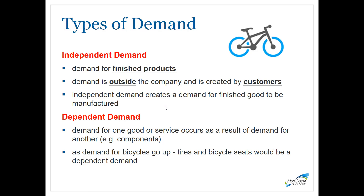There are two types of demand: independent demand and dependent demand. Independent demand is demand for a finished product — such as a bicycle — created by customers outside the company. Dependent demand is demand for a good or service that results from demand for another product — think components. As independent demand for bicycles increases, dependent demand for components like tires and bicycle seats also increases. Understanding independent demand helps make better decisions about dependent demand as well.